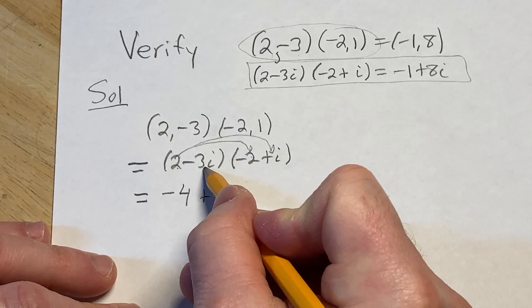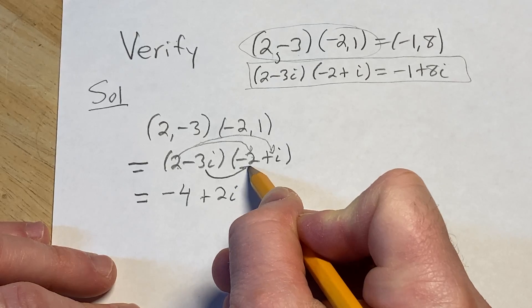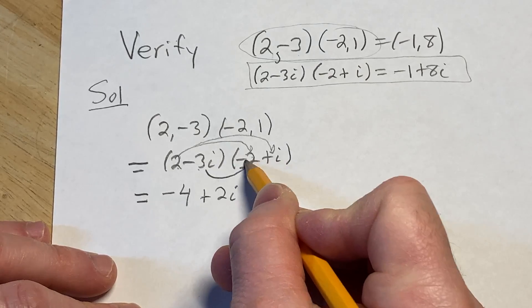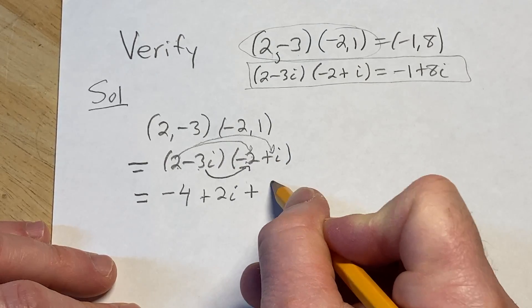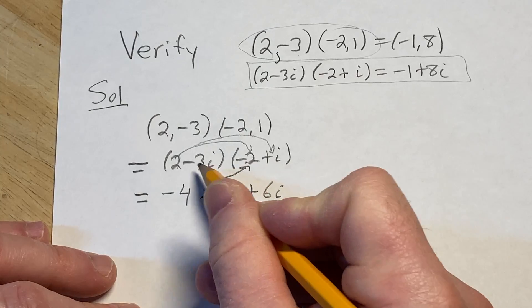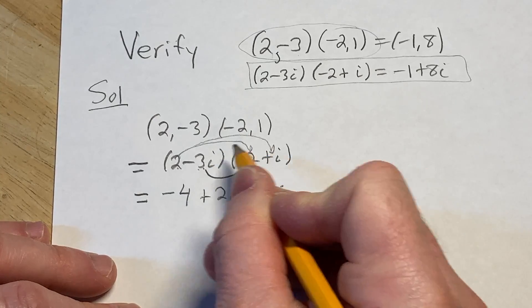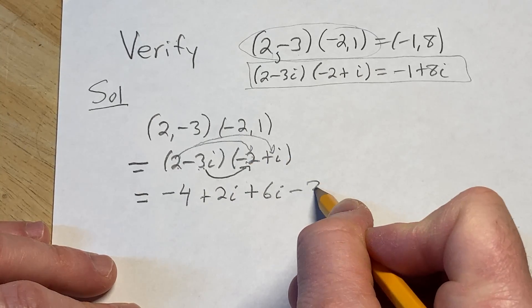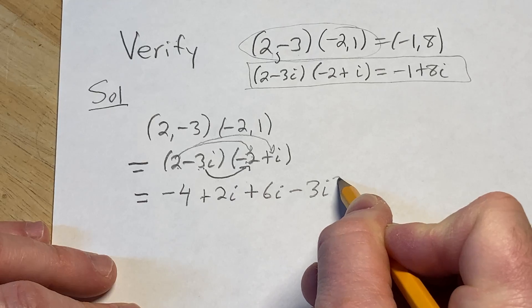And then we do minus 3i times minus 2, so minus and minus is plus, so we get plus 6i. Minus 3i times i is going to give us a minus 3i squared, that's because i times i is i squared.